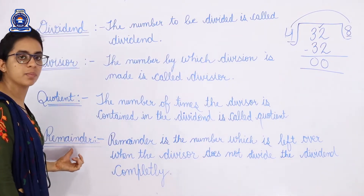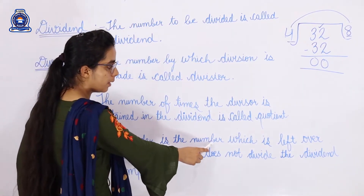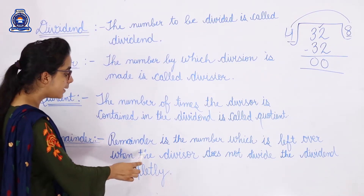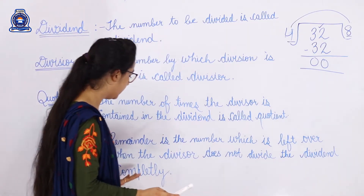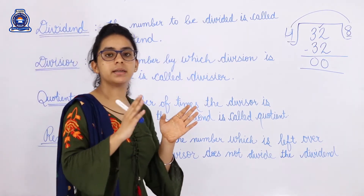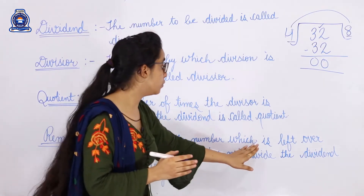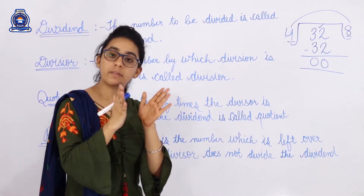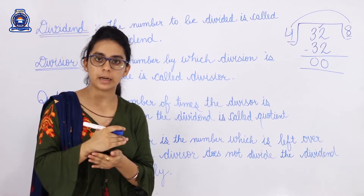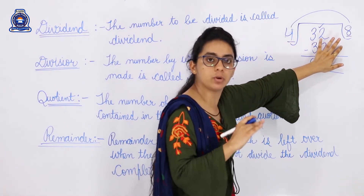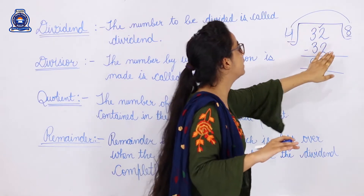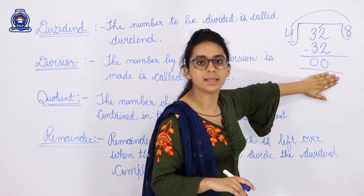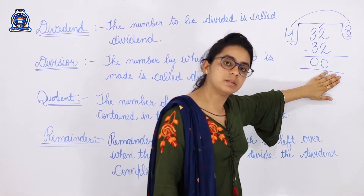The next term is remainder — the number which is left over when the divisor does not divide the dividend completely. Here, 4 eights are 32: 2 minus 2 is 0, 3 minus 3 is 0, so the remainder here is zero. When division is complete with nothing left over, the remainder is 0.